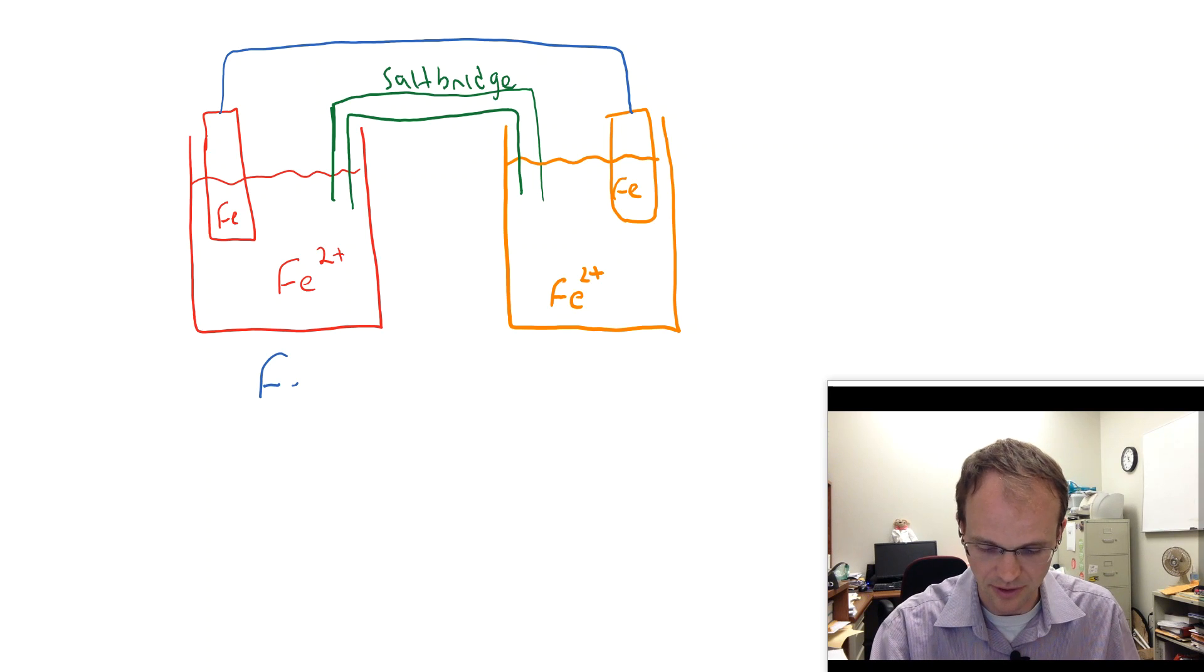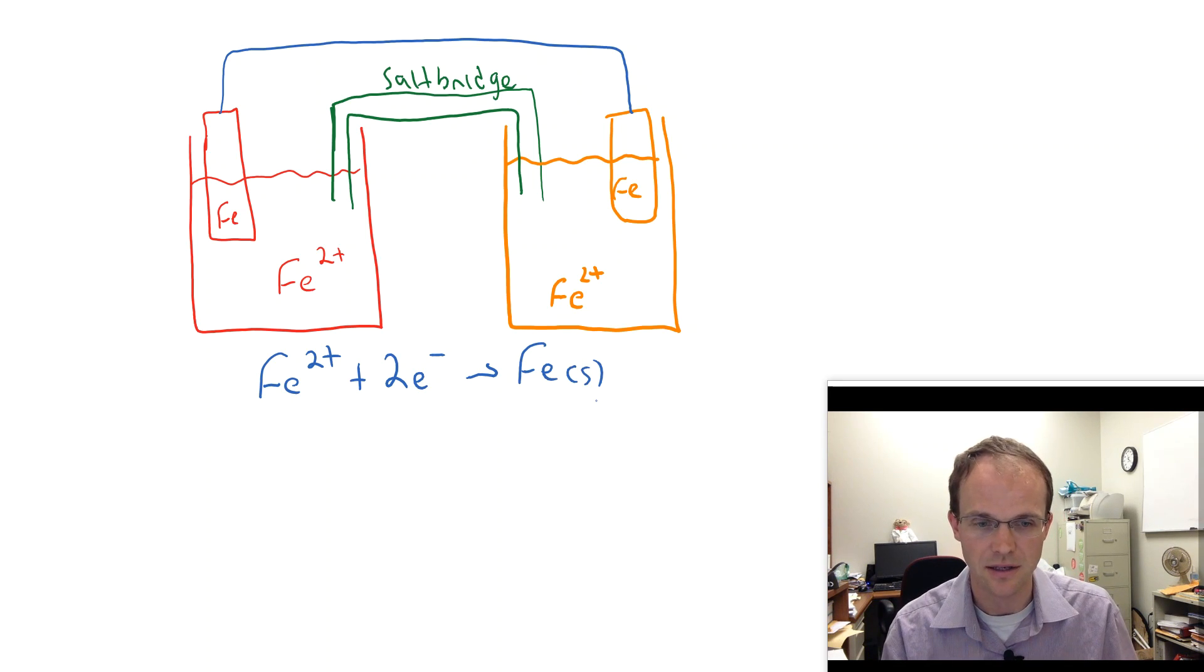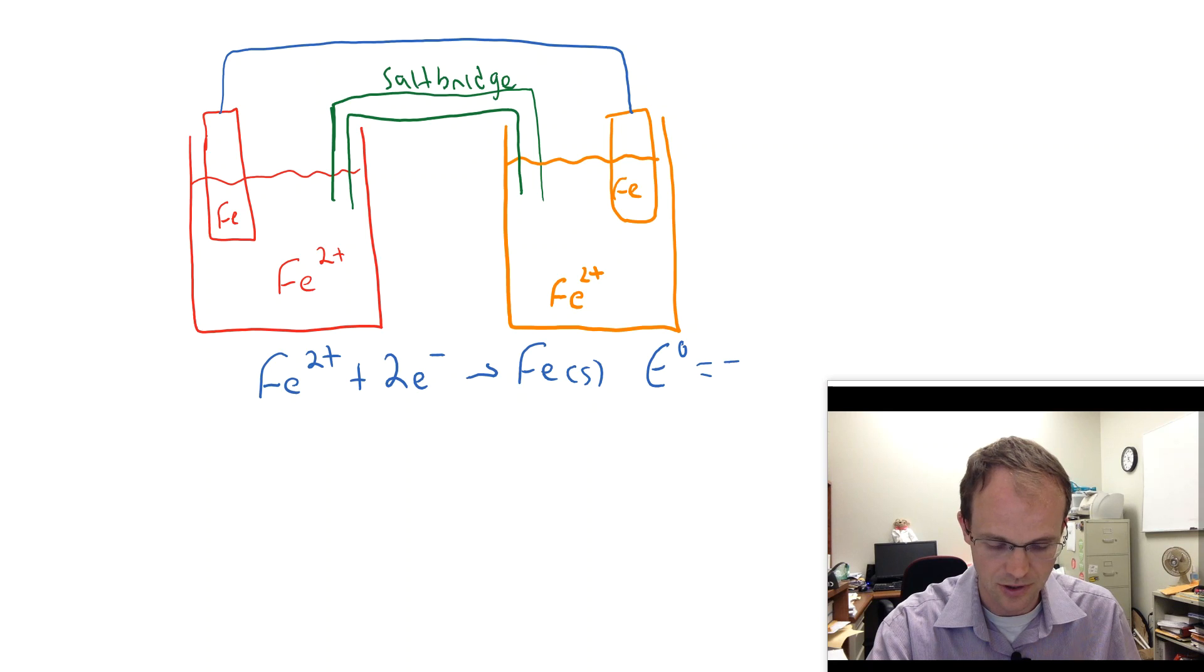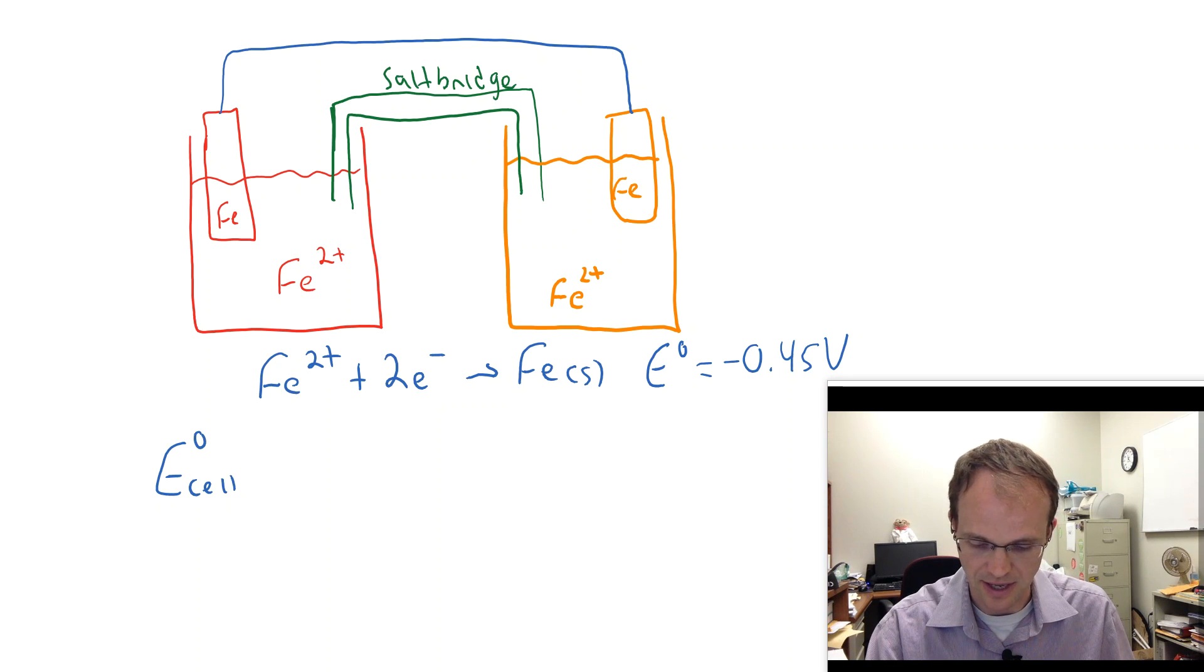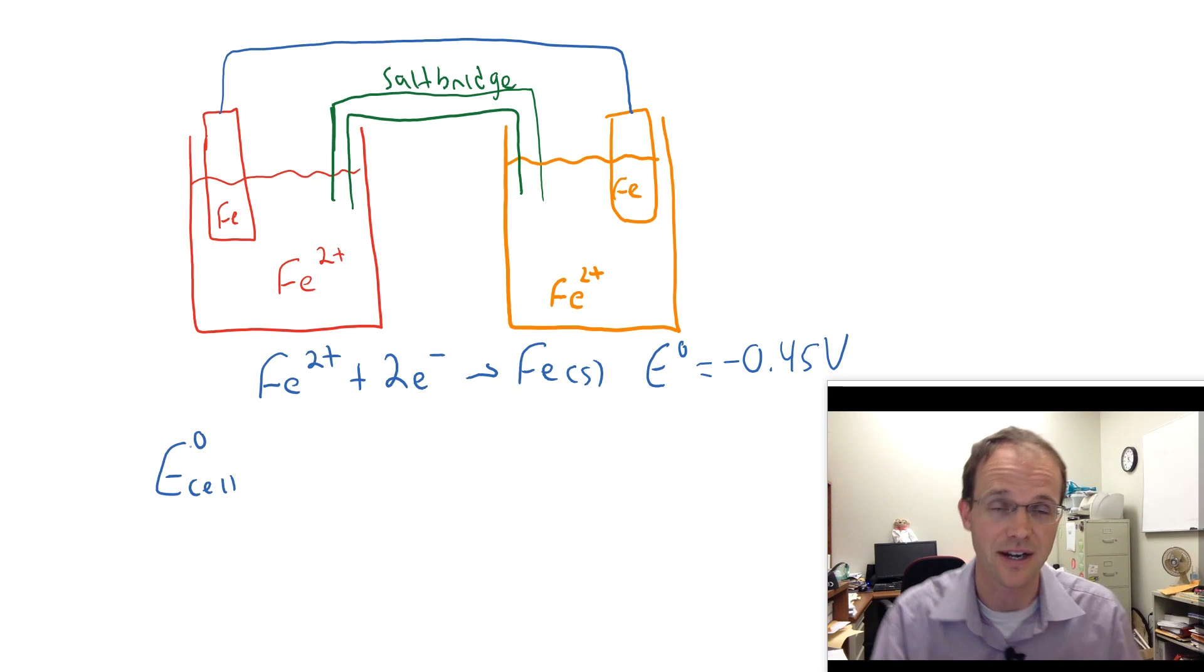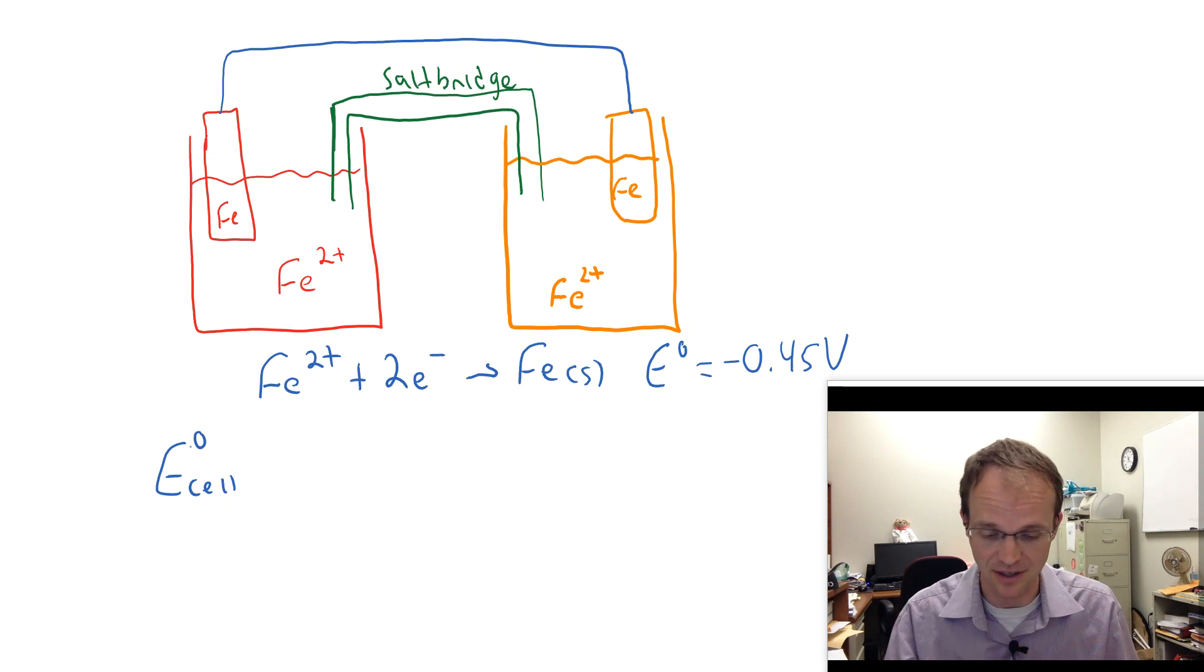In fact, if you go ahead and look up the standard reduction potential for iron 2+ going to iron solid, you find out that the standard reduction potential is negative 0.45 volts. So if we wanted to calculate the cell potential here, it's going to be the cathode minus the anode. Of course, we don't really have a cathode or an anode here because nothing's happening. So it really doesn't matter which side we pick. It's minus 0.45 volts minus a minus 0.45 volts or a big whopping 0 volts.